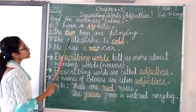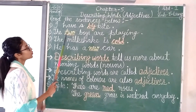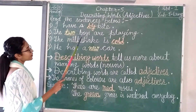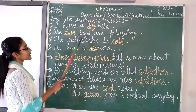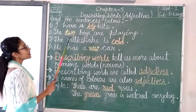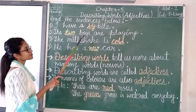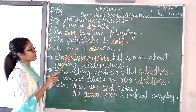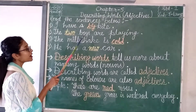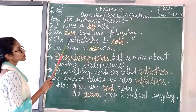See the next sentence: The two boys are playing. Here I have highlighted 'two'. This word 'two' is describing about 'boys'. Boys is a noun — it is a person. So, the word that is describing the noun here is 'two'.